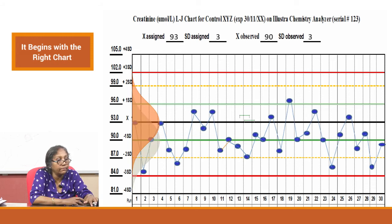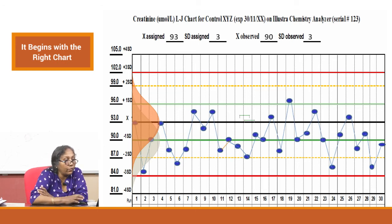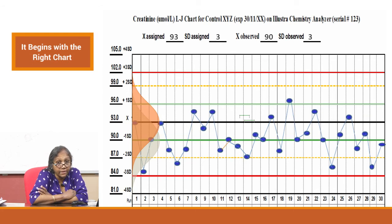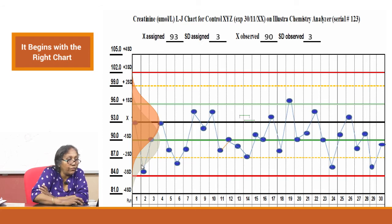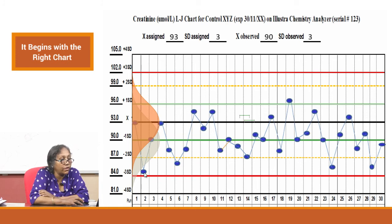If you look with 90 as the mean, there are no rejections that should happen — these are all good runs. But with 93 as the assigned mean, these appear as 1:2S warnings. Conversely, a point that should be a 1:2S warning using the correct mean of 90 goes unnoticed because referenced to 93 it looks like a normal run, creating false acceptance.